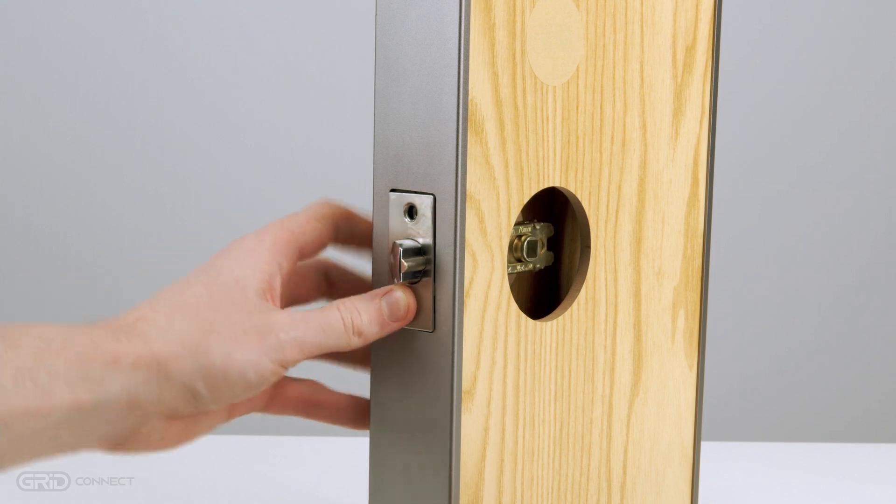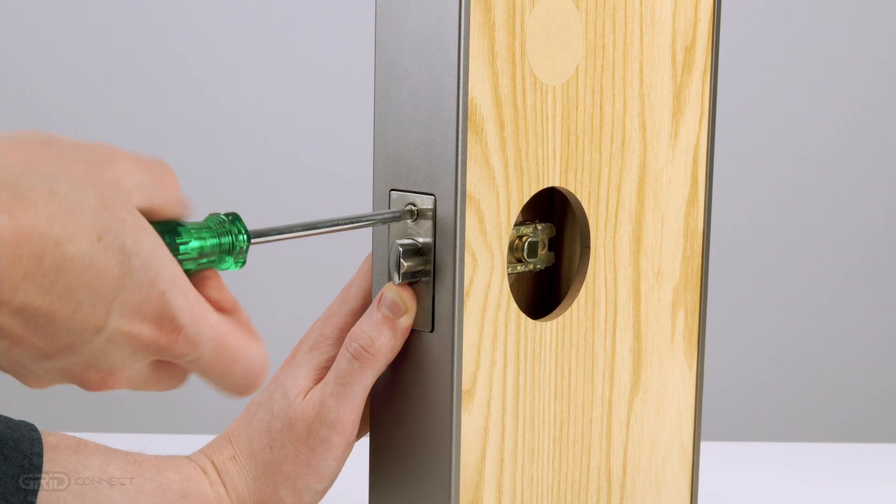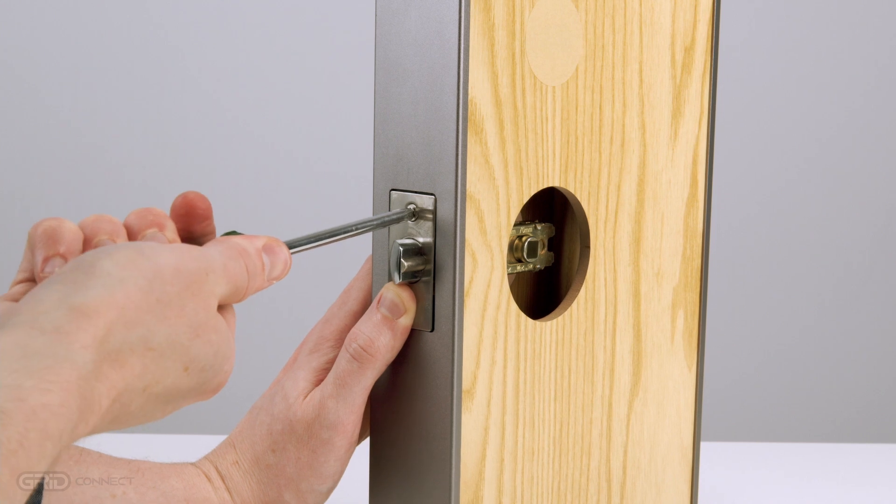Secure the latch with the provided A1 or B1 screws. Make sure the beveled edge of the latch tongue faces the direction of a closing door.